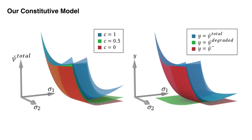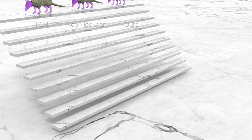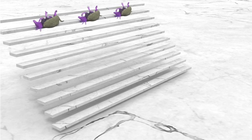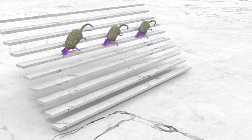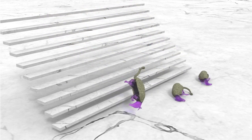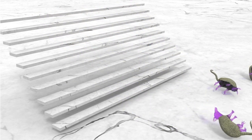We adopt a deviatoric dilational split Neo-Hookian hyper-elasticity to enable elastic degradation within PFFMPM. Here we show the decomposition of the model into its tensile and compressive components, where only the tensile part is allowed to be degraded. With three realistic armadillos, we compare this hyper-elasticity model with the popular fixed co-rotated and Neo-Hookian models. Note our scheme exhibits similar behavior.